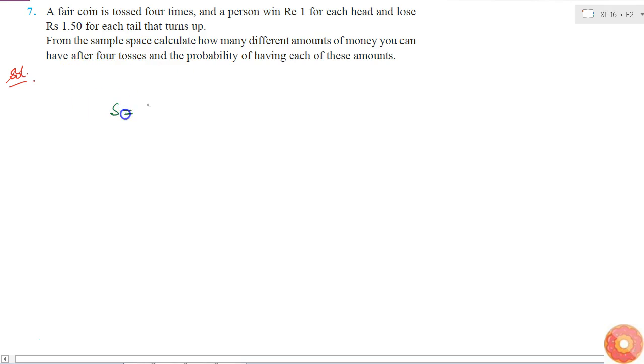Let me first write down the sample space. If a fair coin is tossed 4 times, this means that every time I toss a coin I can get a head or a tail. So total number of elements in the sample space will be 2 to the power 4, which is 16.